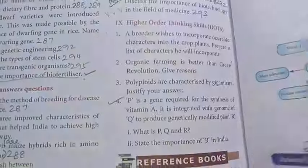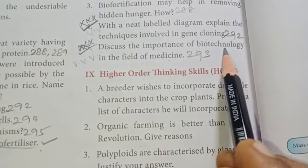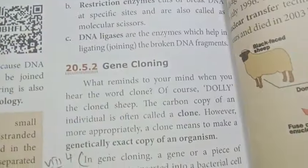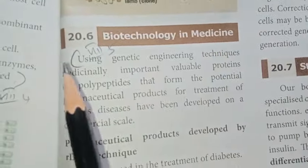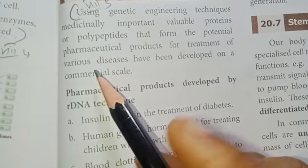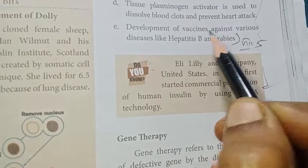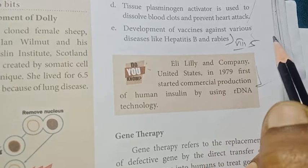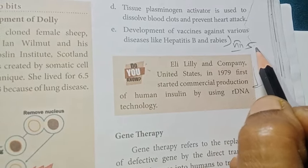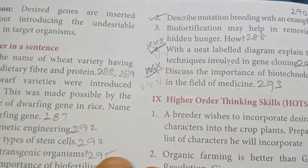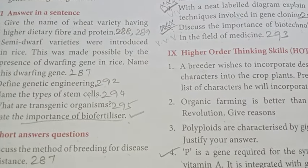Fifth question: Discuss the importance of biotechnology in the field of medicine. Page 293. Biotechnology in medicine — using genetic engineering, pharmaceutical products A, B, C are produced, including development of vaccines against various diseases like hepatitis B and rabies. The book back exercise for this lesson is now complete. Wishing you all the best — thank you for your support and thanks for watching.